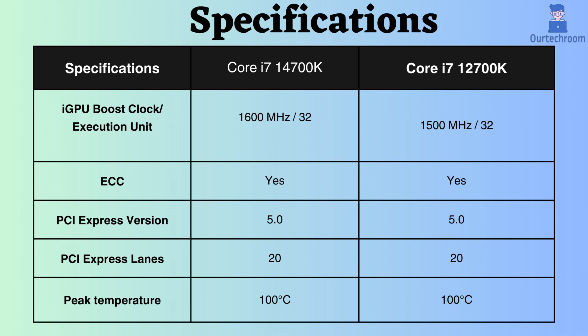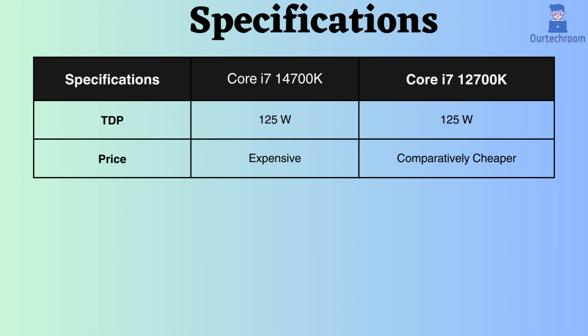Consequently, the 14700K supports a higher frequency graphics card, which can be advantageous for graphical tasks. Additionally, both processors support ECC, making them suitable for critical systems. They are both equipped with PCI version 5 and have 20 PCI lanes, allowing for better handling of peripherals and faster data transfer rates. Both processors have a maximum temperature tolerance of up to 100 degrees Celsius, and the TDP for both stands at 125 watts.